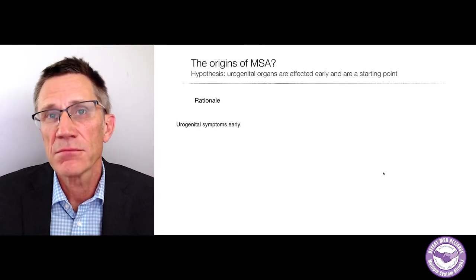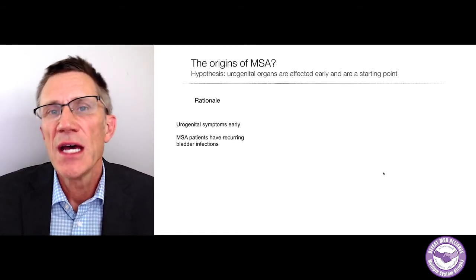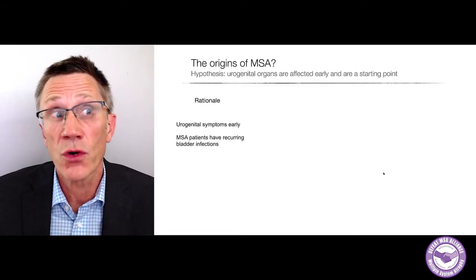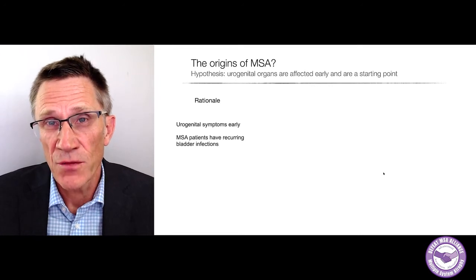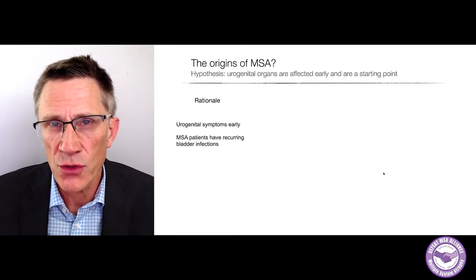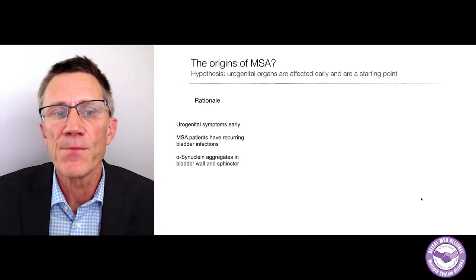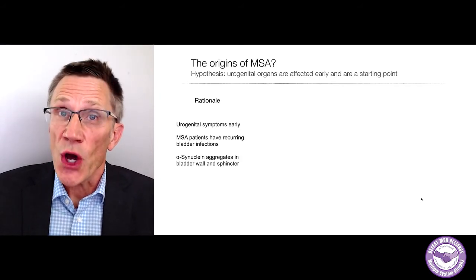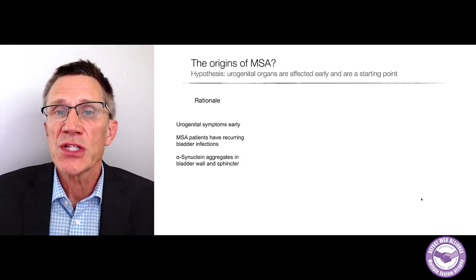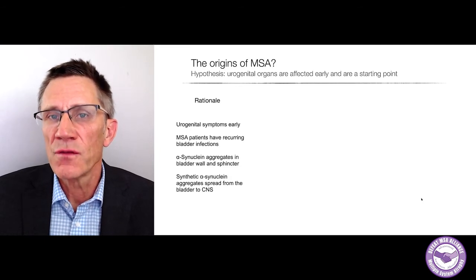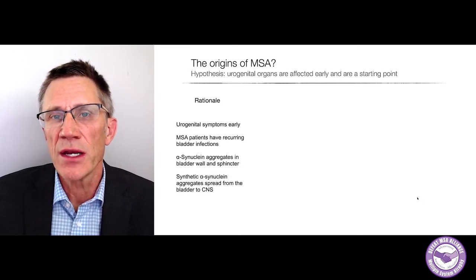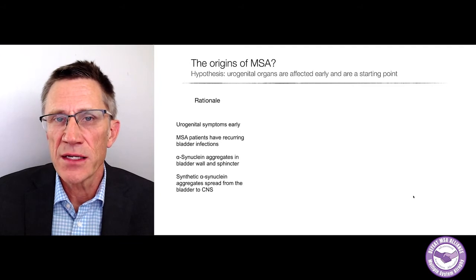What I'm going to talk about now is an early area of research. We have a hypothesis that urogenital organs are affected early and could be one starting point for the disease process. The rationale is that urogenital symptoms occur early, MSA patients frequently report bladder infections, and we now know that synuclein aggregates are prevalent in the bladder wall and urinary sphincter.